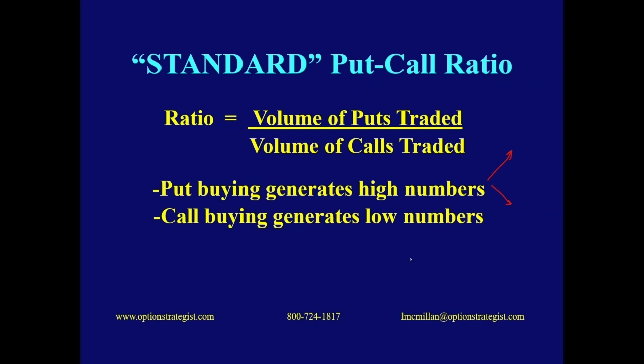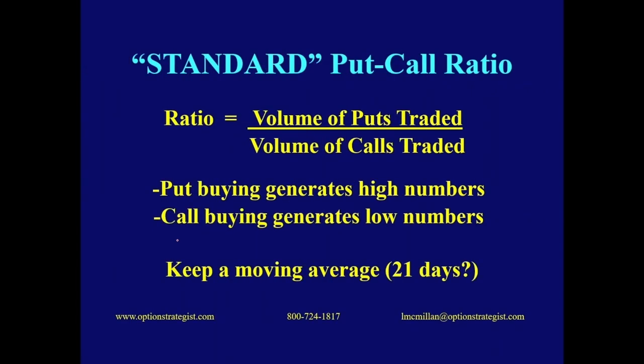So it moves opposite. Similarly, since calls are in the denominator, heavy call buying would make the ratio move lower — but typically there's heavy call buying when the stock is moving higher, so again it moves opposite. Why Zweig didn't use a call-put ratio, I don't have any idea. Some technical websites will actually show you a call-put ratio, saying it's easier to spot market tops, but we pretty much just stick with the traditional put-call ratio. We use a 21-day moving average, just in case there's something to Fibonacci, on most of our ratios.